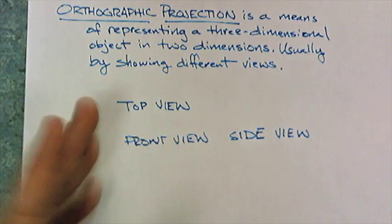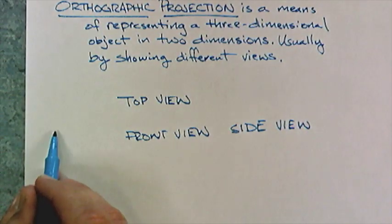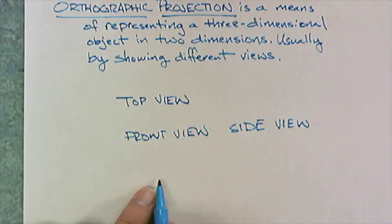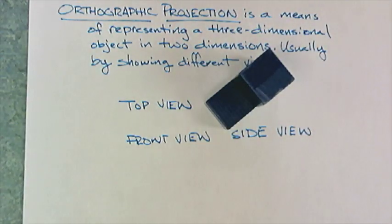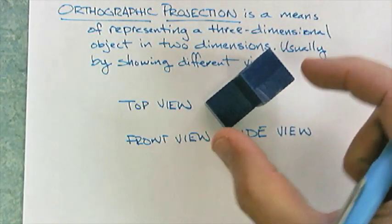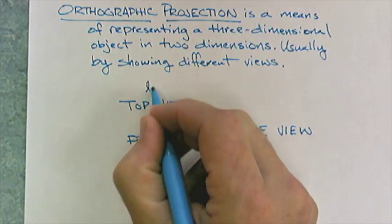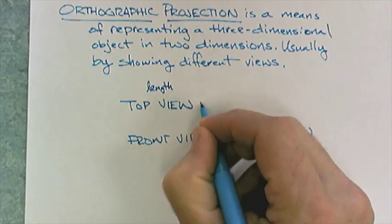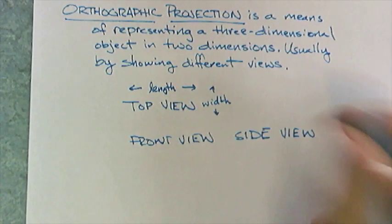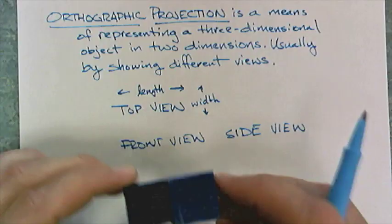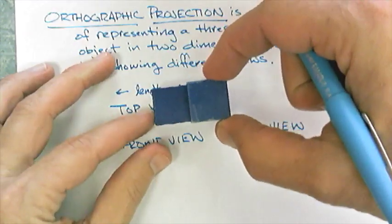You could also show multiple views. If I wanted to do another side view, I'd put it here. And if I wanted to show the bottom view, I would put it here. If I'm looking at the top, I know how long it is and I know how wide it is. Basically you get a length and a width. You get length and width if you're looking at it from the top view.